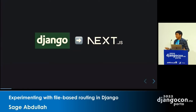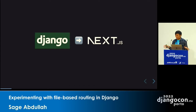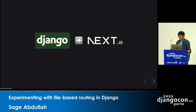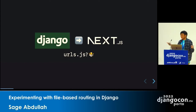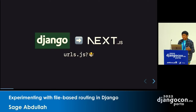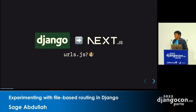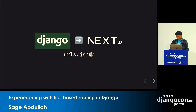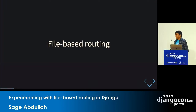Coming from Django to Next.js, I noticed some similarities as they are both web frameworks, and also some differences. But one thing that stood out to me the most is the fact that there is no urls.js — or .ts, because the cool kids use TypeScript. So if you have not used Next.js, you might wonder: how do you define the URLs in your web application? Well, they have this thing called file-based routing.